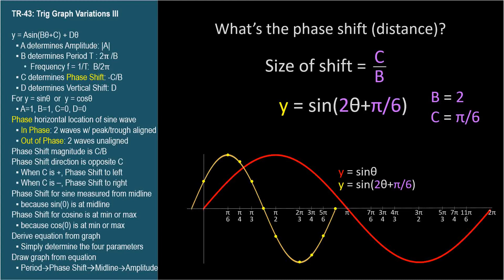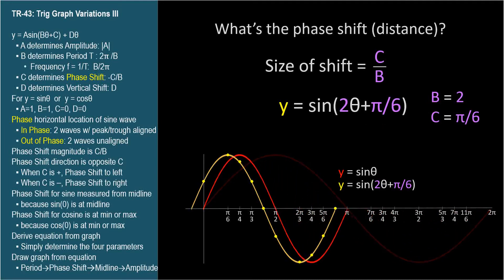Something looks unusual — we don't have a uniform horizontal shift from the red curve to the yellow curve. But consider that the period of our new curve is 2 pi over b. Since b is 2, the period is pi. Let's compress the red graph to have a period of pi. Now we can see a uniform phase shift of pi over 12, which is c over b: pi over six divided by two.